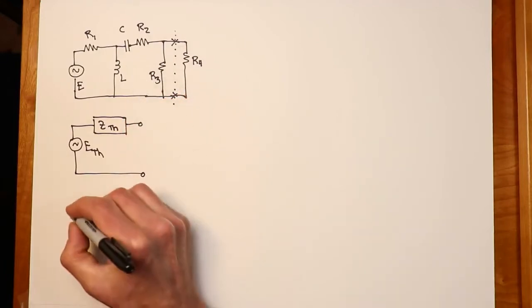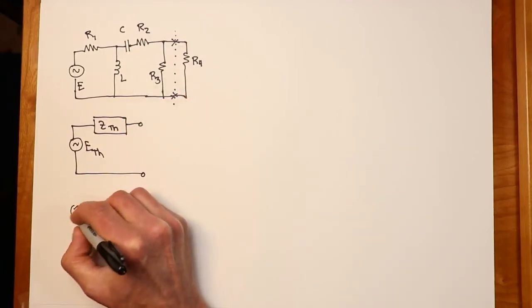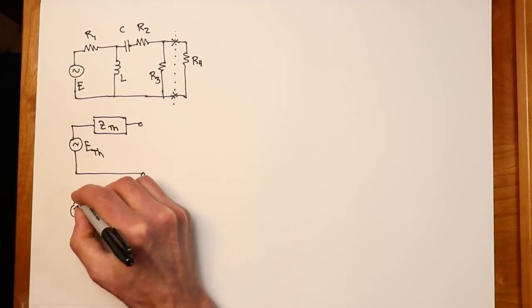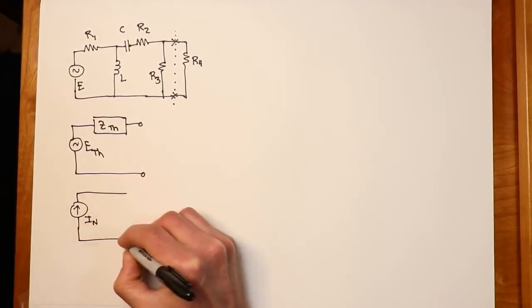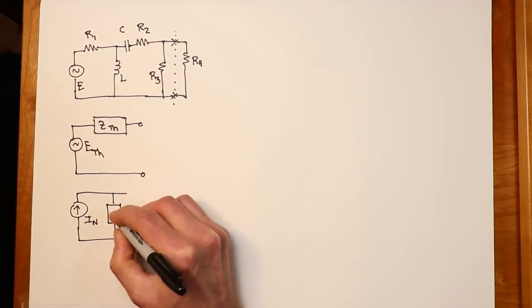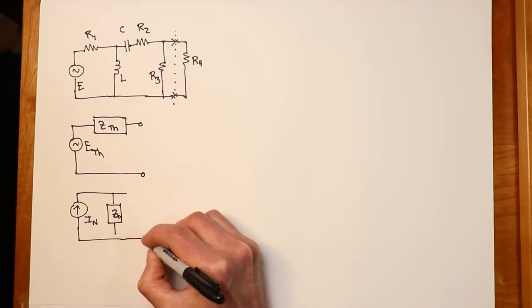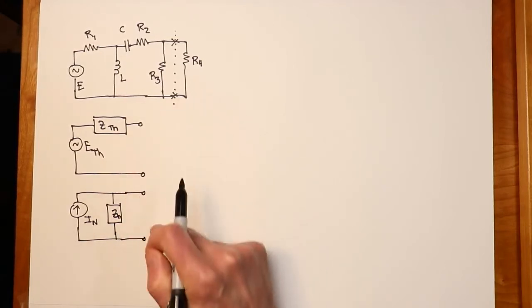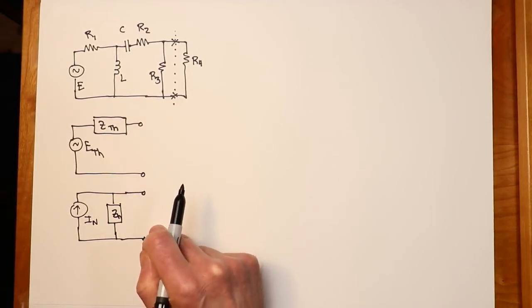If we were going to do the Norton equivalent, we would have the I-Norton, and then there would be across it the Norton impedance. So here's your Thevenin equivalent, here's your Norton equivalent.